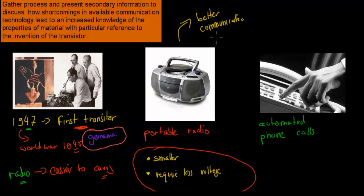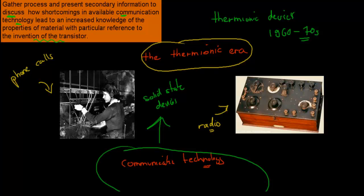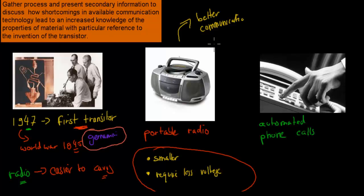And also automated phone calls. In the thermionic devices era we actually had these switchboards. We had one person who would operate a switchboard who would have to connect other people to different people on different lines. We had these switchboards which, when it comes to the transistor, one thing that the transistor was able to do - it was able to act like a switch or an amplifier. These properties allowed it to be used to automate phone calls. We didn't need a switchboard operating anymore, this was now automated, it was all automatic.